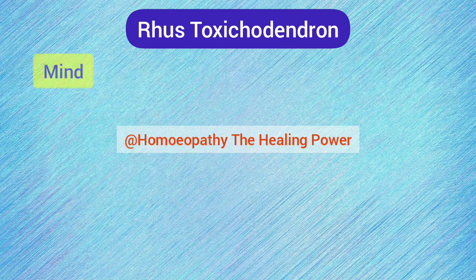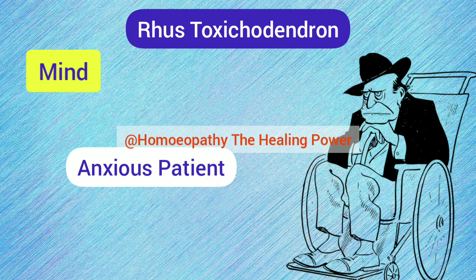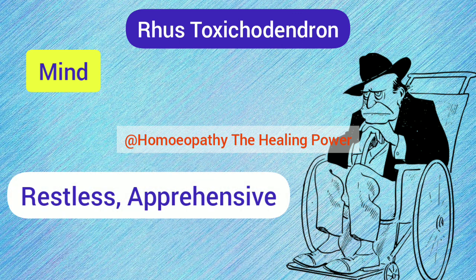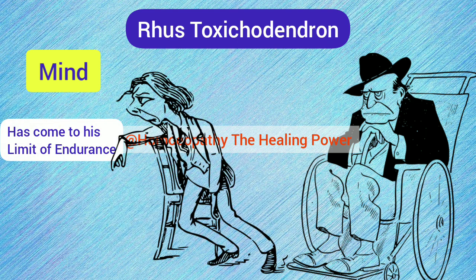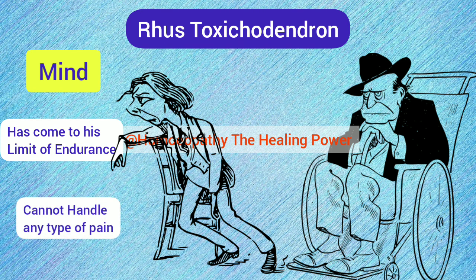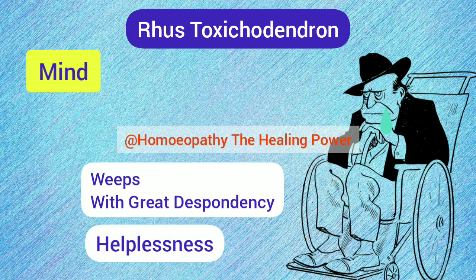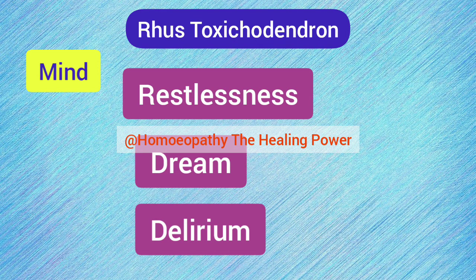Rhus Tox has an anxious mind — anxiety is a keynote, and this brings on the mental symptoms. Severe body pain brings on anxiety; the patient is very restless and apprehensive, feeling he has come to the limit of his endurance and cannot handle any more pain. Thoughts of suicide come to mind, there is great disgust for life, and the patient weeps with great despondency, feeling helpless. Restlessness, typical dreams, and delirium are also seen in the mental sphere.